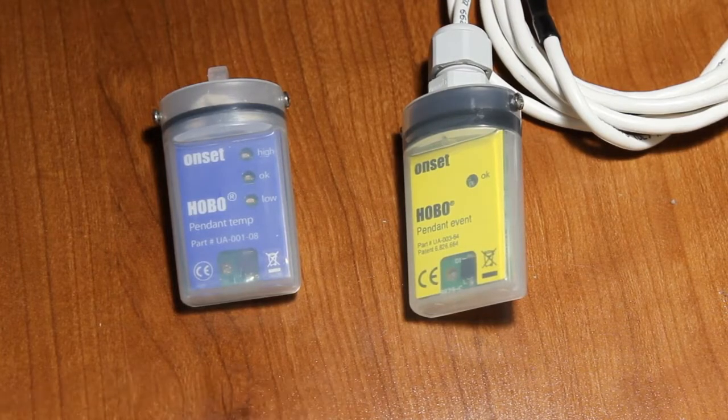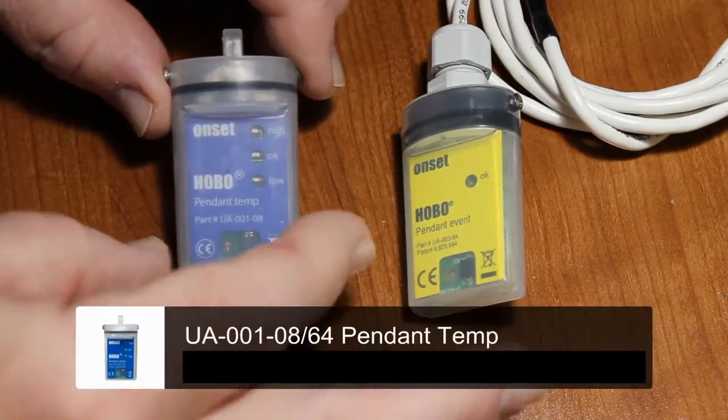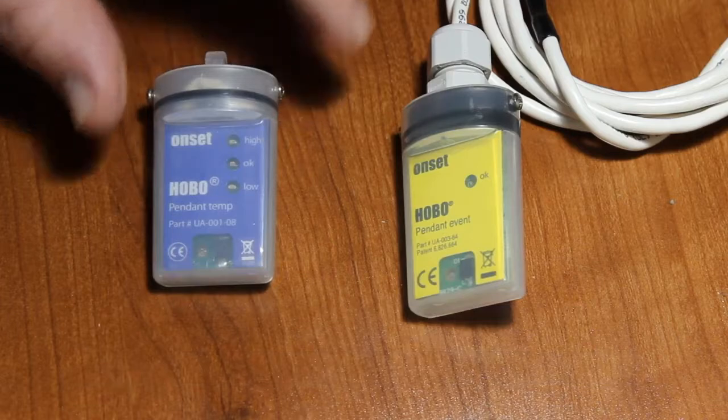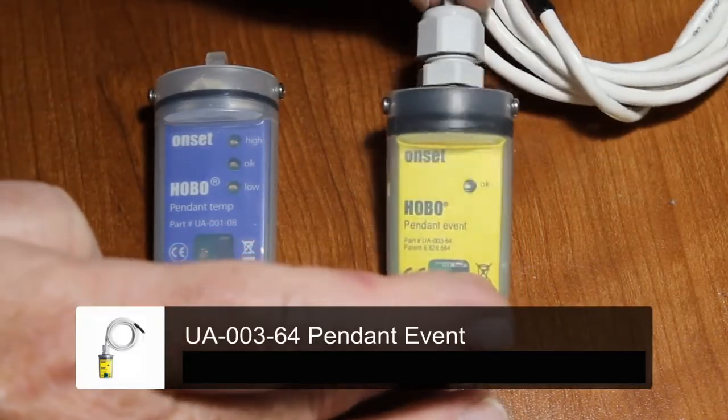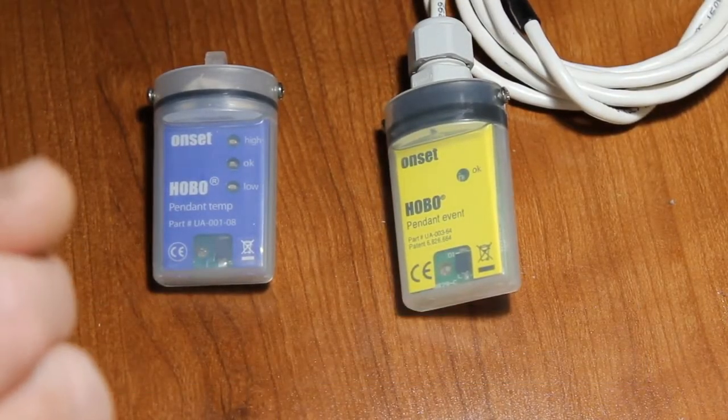What we have here is the temp only pendant, this is the UA001, and we also have the pendant event logger which has the cable coming out of it and that is used in the tipping bucket rain gauge.